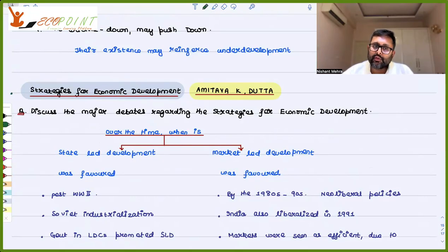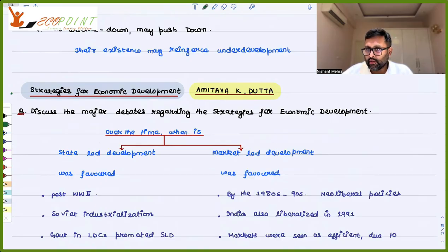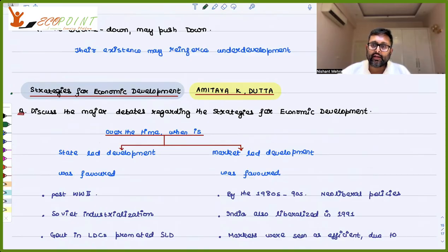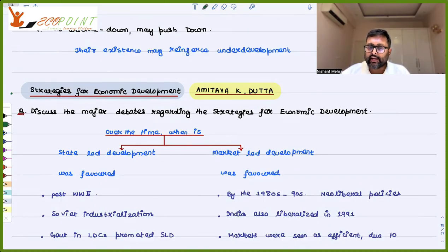We're going to start with the new reading, which is Strategies for Economic Development by Amitava Datta. He has given several debates about what strategy should be picked up for development, particularly in LDCs. We're going to look at the first debate today, which is state versus market.